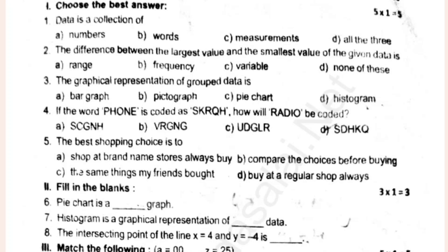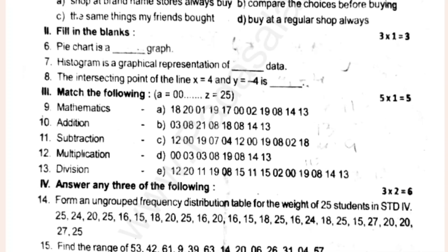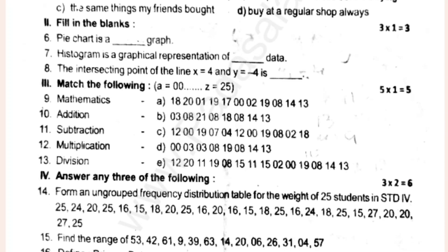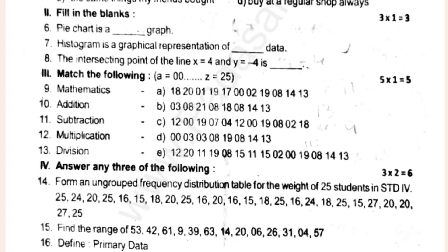The best shopping choice option has a right answer. Phillips. Pychart is a type of graph. Histogram is a graphical representation of data. The intersection point of the line x is equal to 4 and y is equal to minus 4.